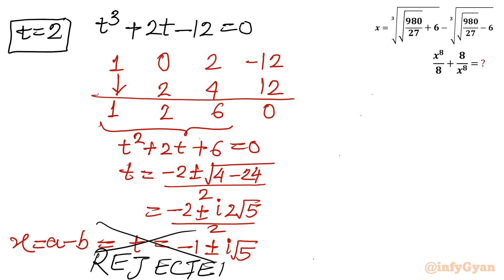Rejected. So which solution is accepted? That is t equal to 2. So it is actually x equals a minus b equals t equals 2.